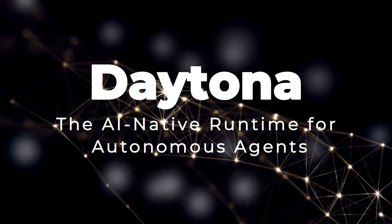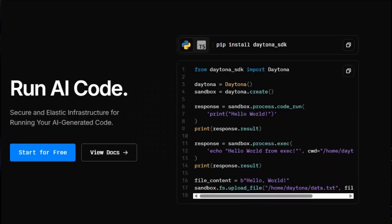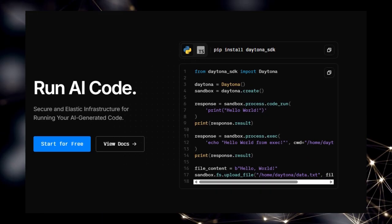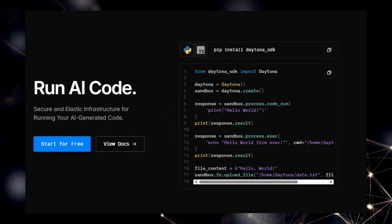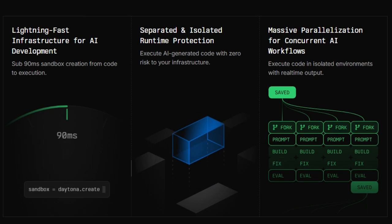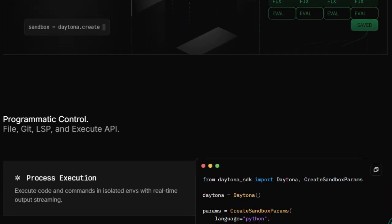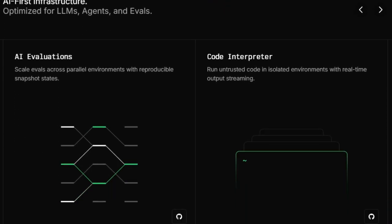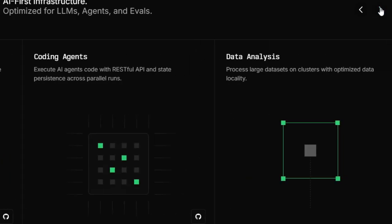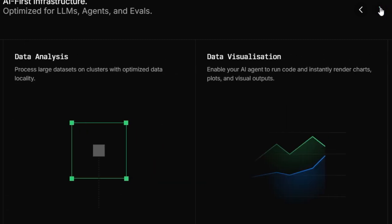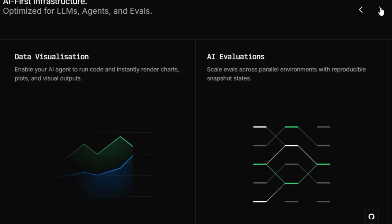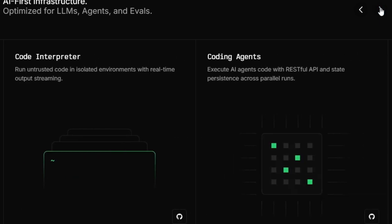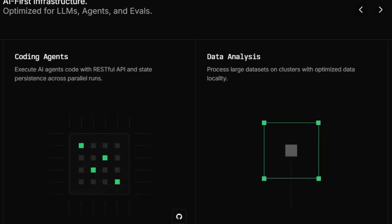Tool number eight: Daytona — the AI-native runtime for autonomous agents. Imagine an AI agent that can not only write code but also spin up its own development environment, test its output, and iterate, all without human intervention. That's the vision behind Daytona, a groundbreaking platform purpose-built to serve AI agents as its primary users. What makes Daytona truly unique is its agent-first architecture — unlike traditional cloud platforms designed for human developers, Daytona offers a fully programmatic, API-first environment where every operation, from creating sandboxes to executing code, is accessible via clean, simple APIs, eliminating the need for dashboards or manual configurations.